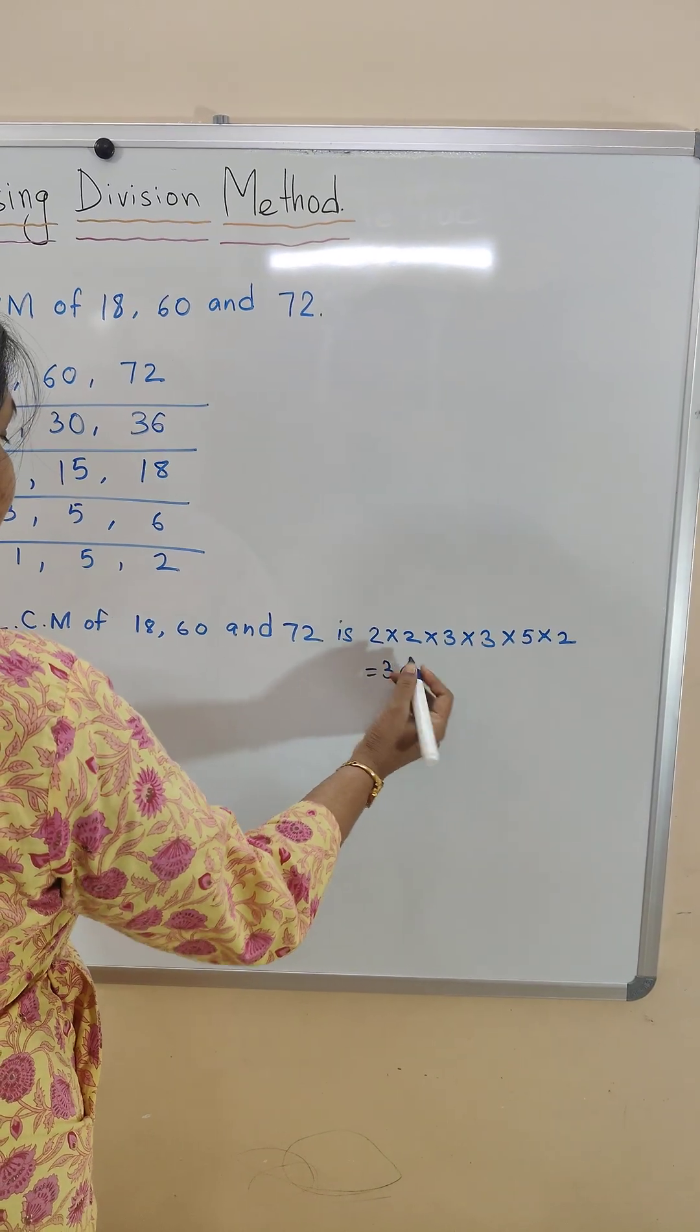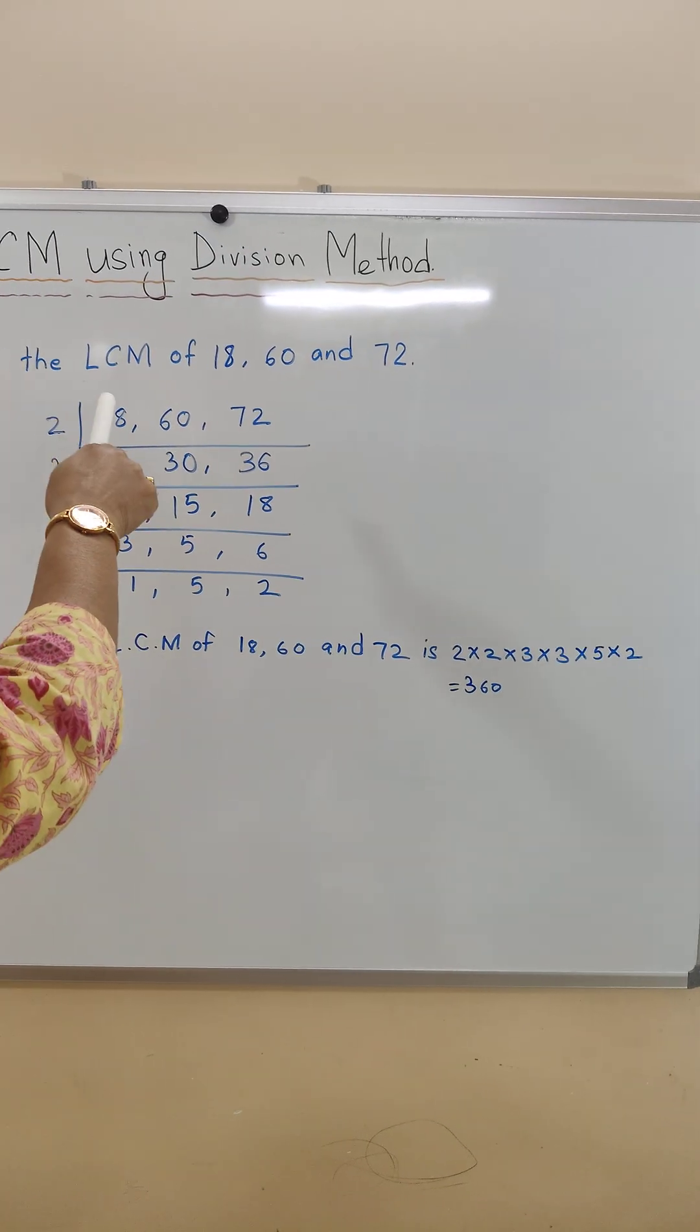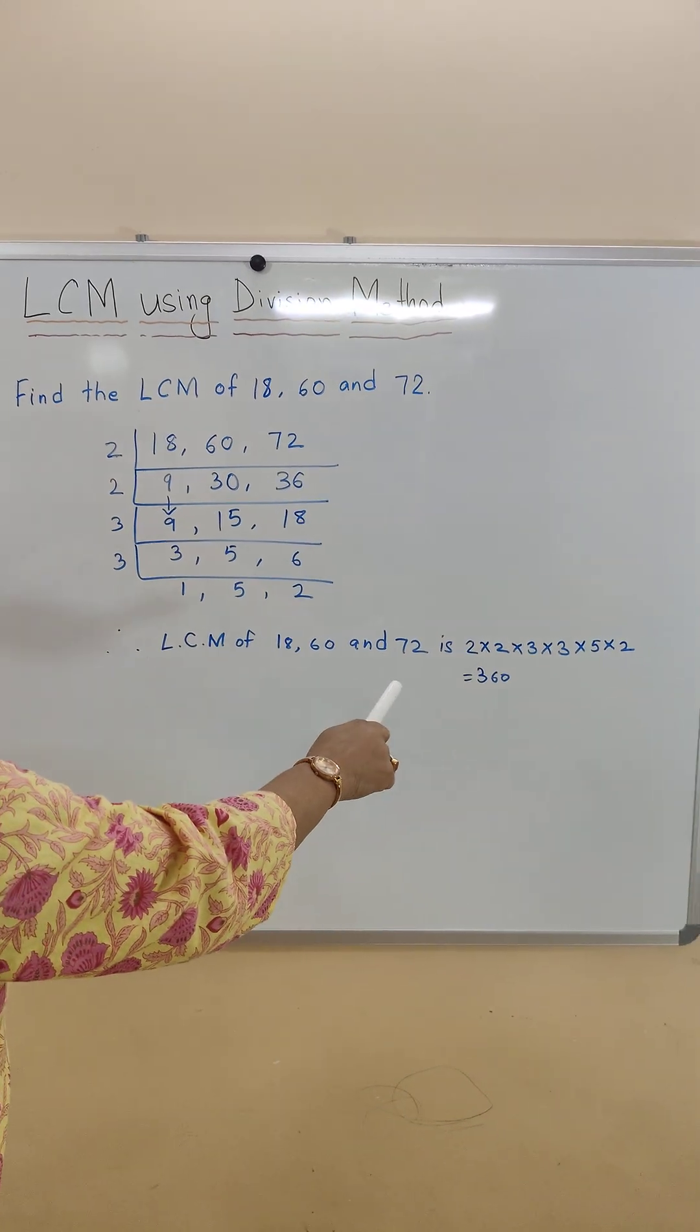Therefore, the LCM of 18, 60 and 72 is 360.